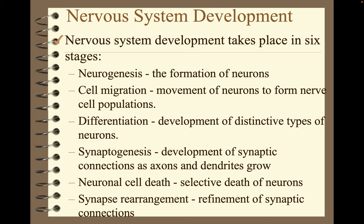Nervous system development takes place in six stages: neurogenesis, the formation of neurons; cell migration, the movement of neurons to form nerve cell populations; differentiation, the development of distinctive types of neurons; synaptogenesis, the development of synaptic connections as axons and dendrites grow; neuronal cell death, the selective death of neurons; and synapse rearrangement, the refinement of synaptic connections.